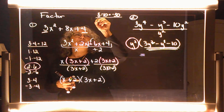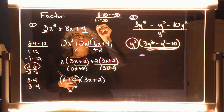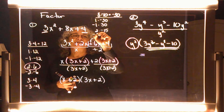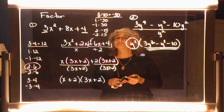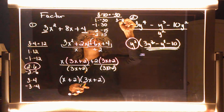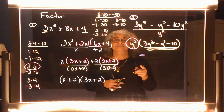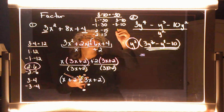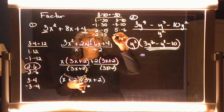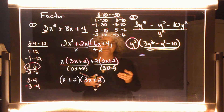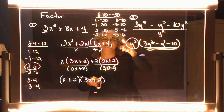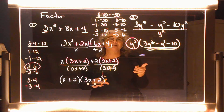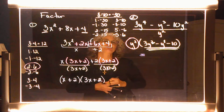One times negative 30, or negative one and positive 30. Two times negative 15, or negative two and positive 15. Three times negative 10, or negative three and positive 10. After three, four — does four go into 30? Nope, skip it. Five is next — five times negative six, or negative five and positive six. After five is six — I already have the six, so I know I'm done.